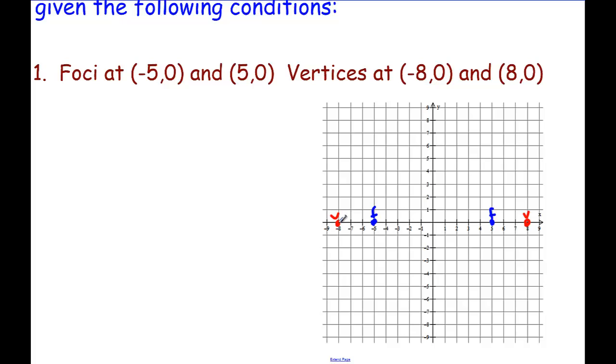Now if we remember our properties of ellipses, this horizontal value, this eight units, is the value that goes under the x because it's horizontal. In this case we're going to call it a because it is our major axis.